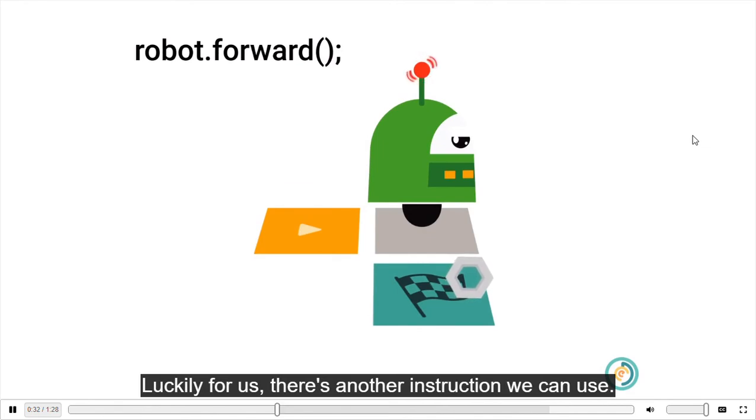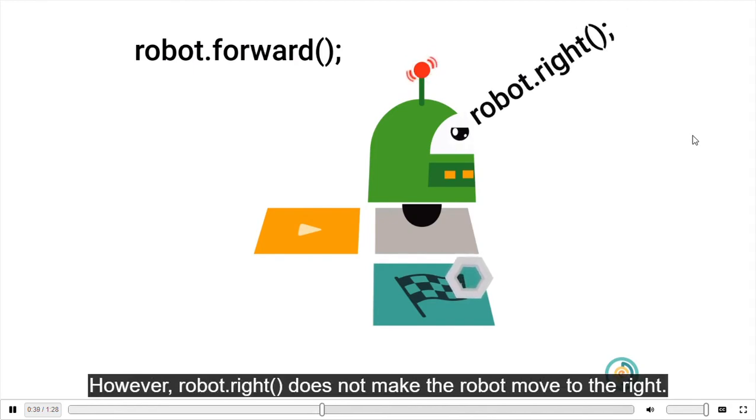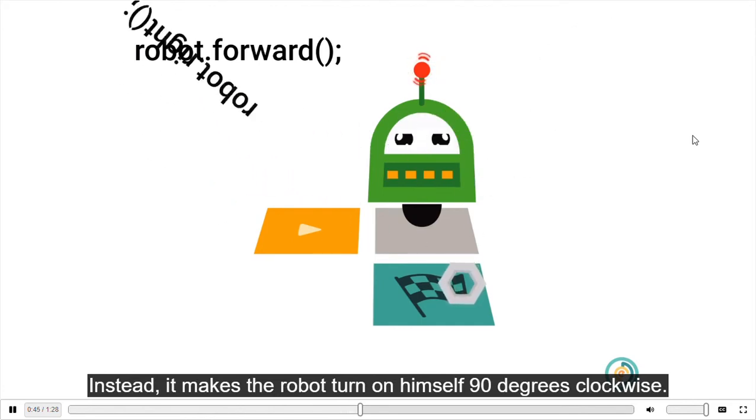Luckily for us, there's another instruction we can use. You may have guessed it. It's robot.right. However, robot.right does not make the robot move to the right. Instead, it makes the robot turn on himself 90 degrees clockwise.